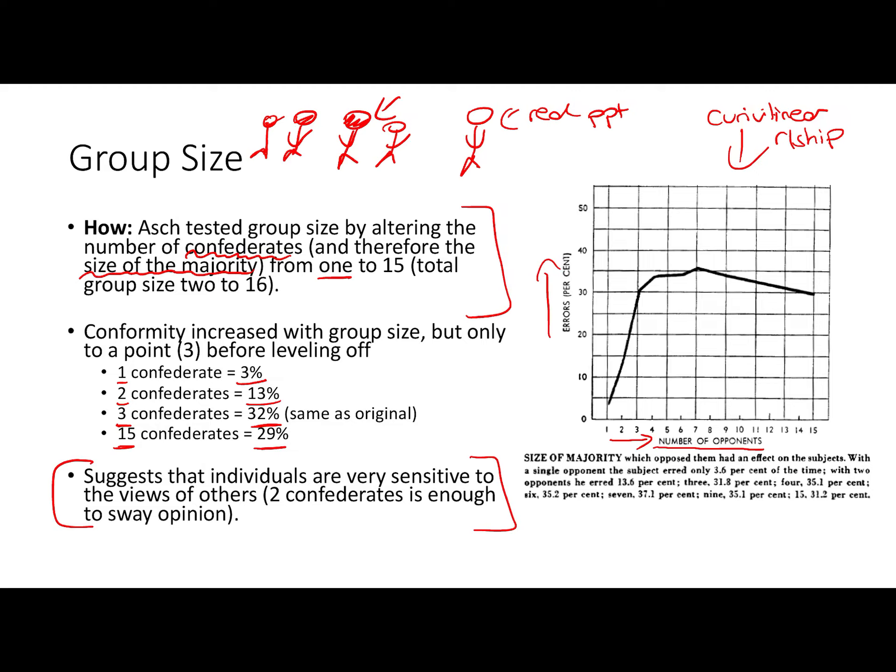This suggests that individuals are very sensitive to the views of others, and the majority doesn't need to be more than three. Two confederates is enough to sway opinion, but beyond three, we don't need any more. With very large groups, participants may start to get suspicious that the confederates are all in on it together — so by the time fifteen people are giving an obviously wrong answer, suspicion sets in. It's important to know both how Asch investigated this variable and what the findings were.